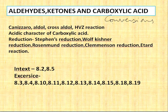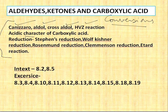Next are Aldehydes, Ketones, and Carboxylic Acids. Conversions will definitely come from this chapter — conversions are most important here. The reactions to learn are Cannizzaro reaction, aldol condensation, cross aldol, HVZ reaction, and acidic character of carboxylic acid. For reduction: Stephen reduction, Wolff-Kishner reduction, Rosenmund reduction, Clemmensen reduction, and Etard reaction.